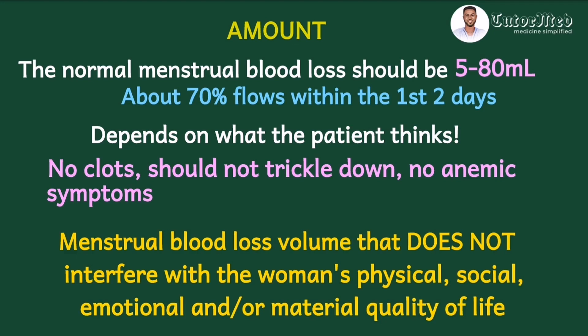The old term for excessive menstrual bleeding was menorrhagia, and for little bleeding, hypomenorrhea. But these have been abandoned. We now say the woman has heavy menstrual bleeding if it is excessive, or light menstrual bleeding if she considers it too little.